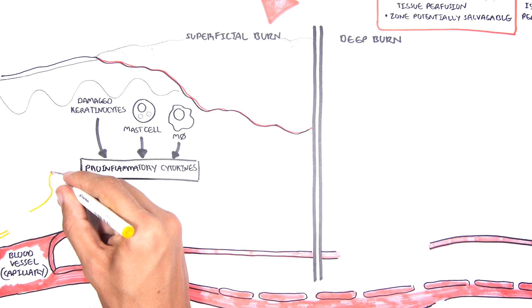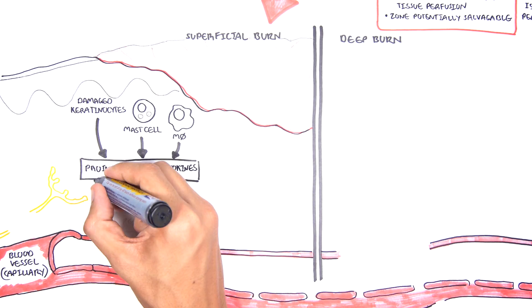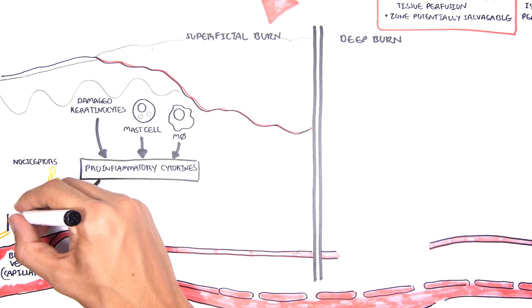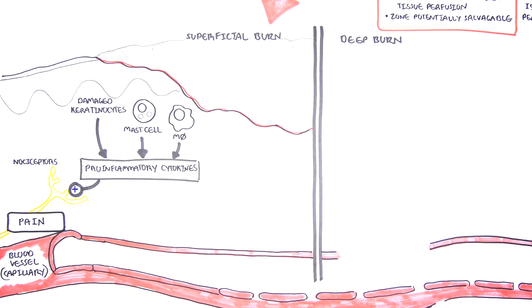The cytokines will stimulate nerve endings around the dermis. The sensory nerve endings here can be the ones that detect pain, for example, and pain is an important feature of superficial burns.